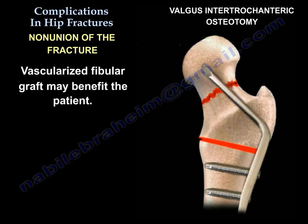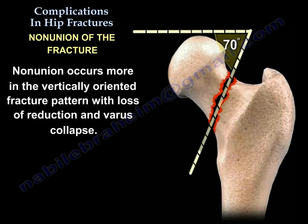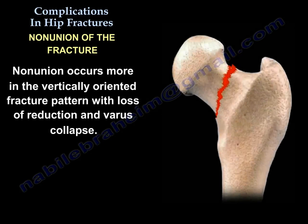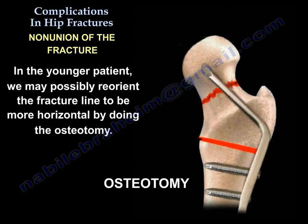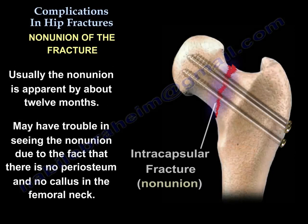Vascularized fibular graft may also benefit the patient. Nonunion occurs more in the vertically oriented fracture pattern with loss of reduction and varus collapse. In the young patient, we may reorient the fracture line to be more horizontal by doing the osteotomy. Usually, this nonunion is apparent by about 12 months.